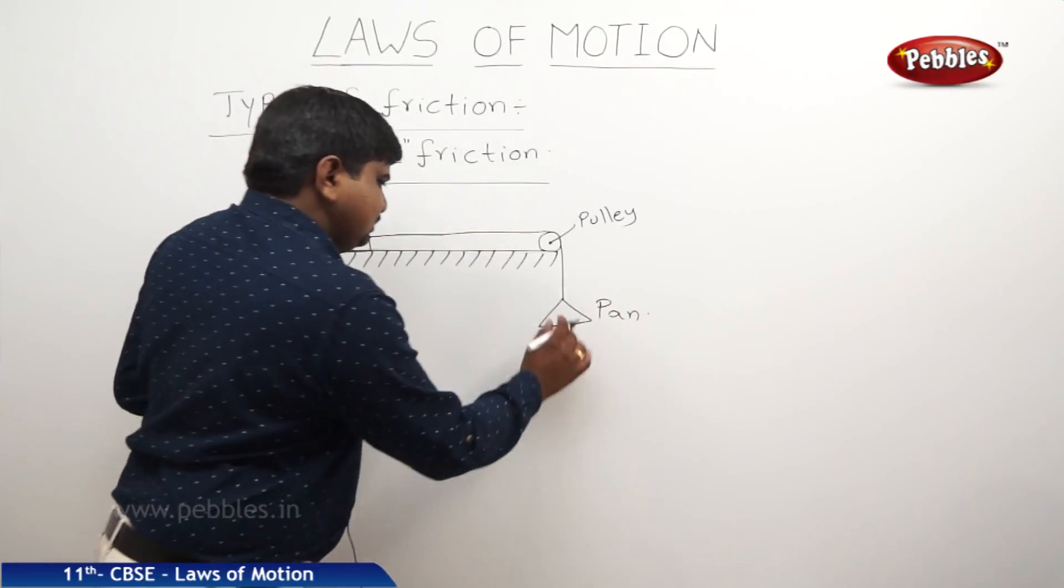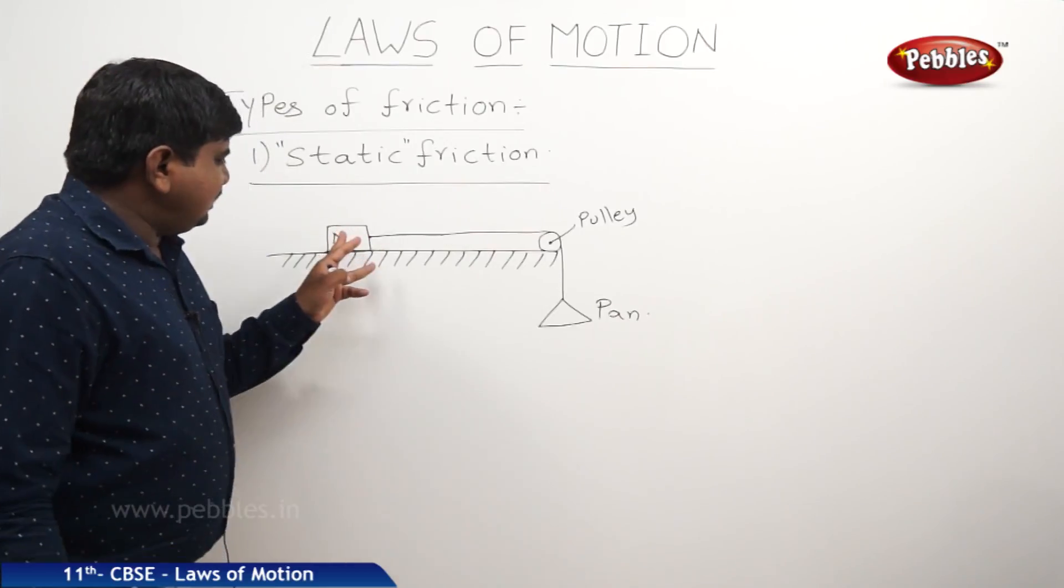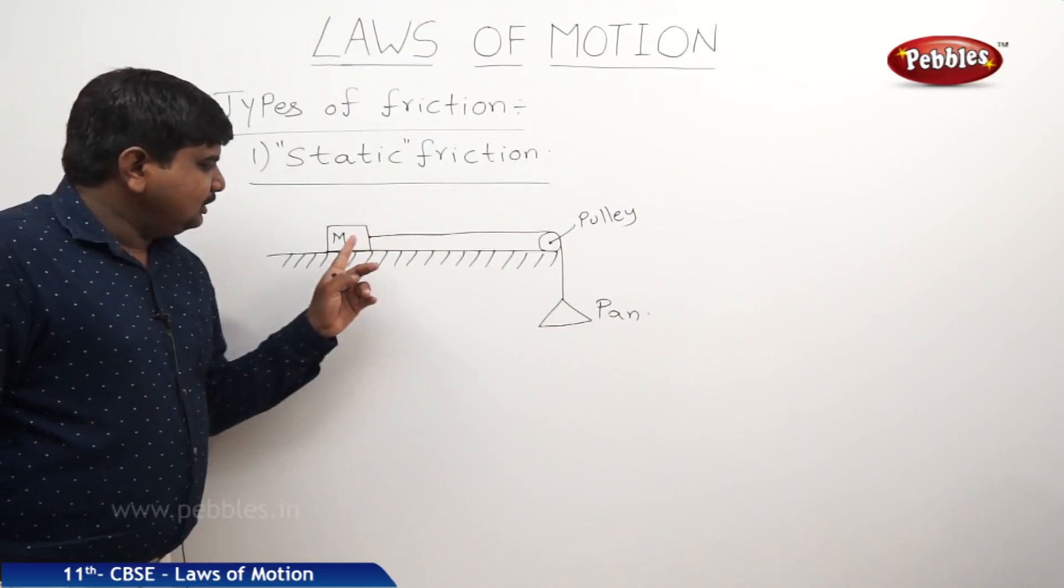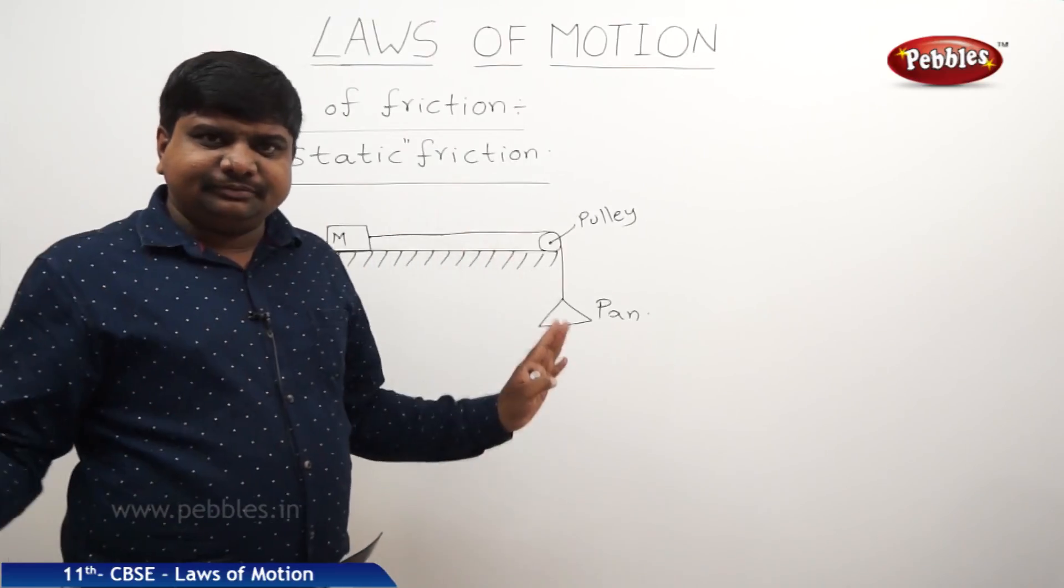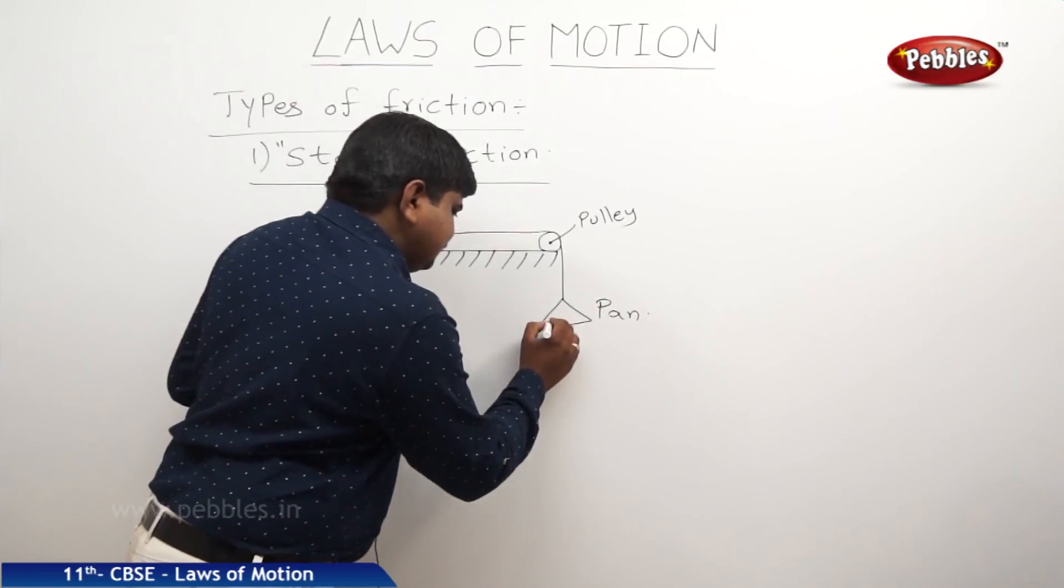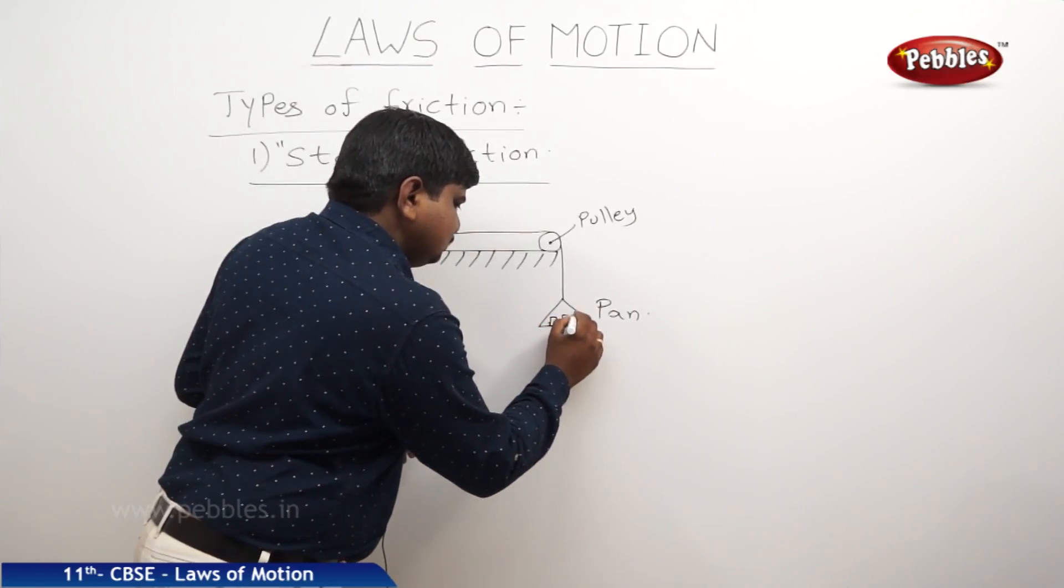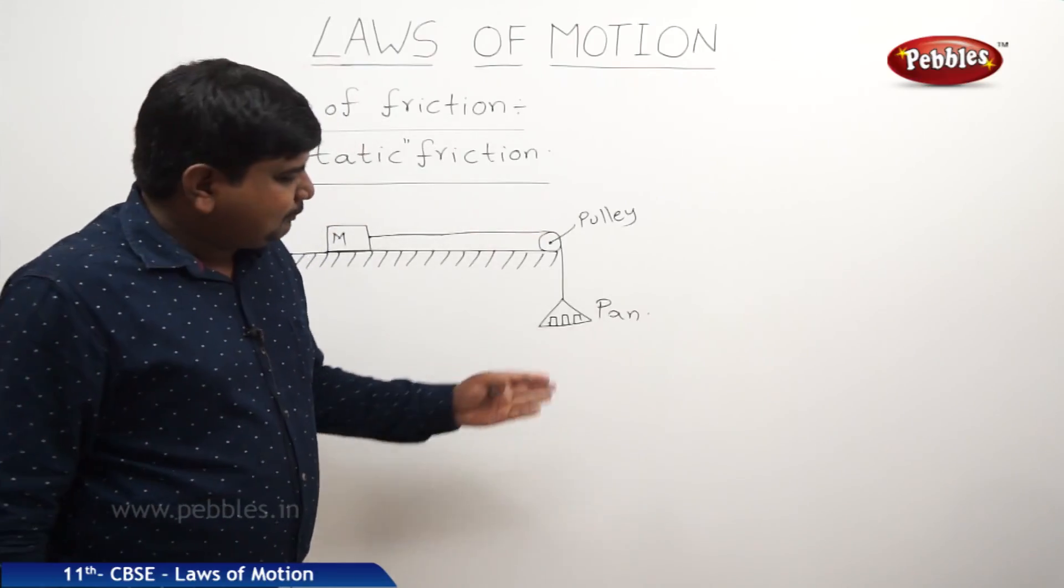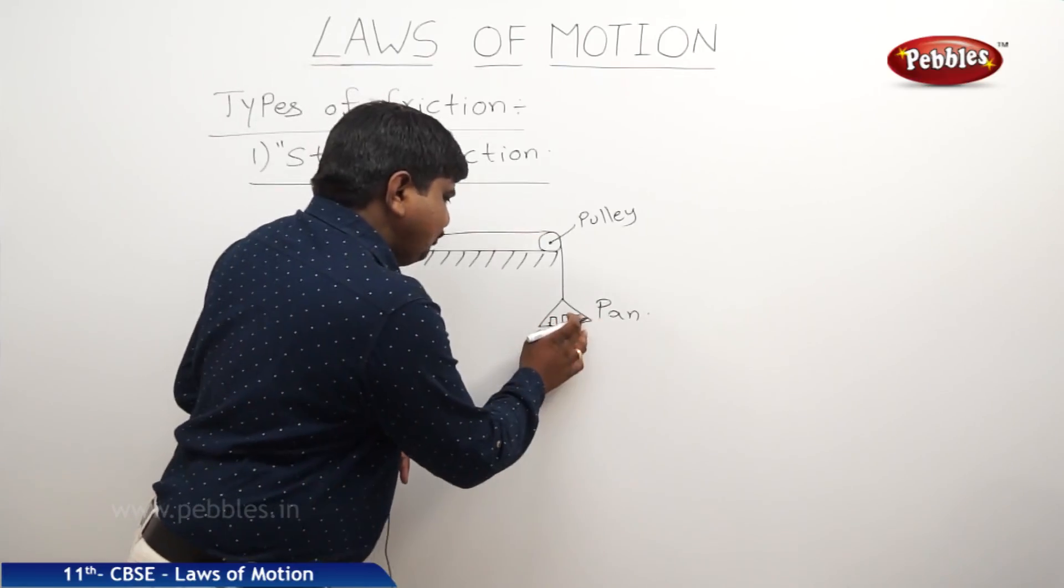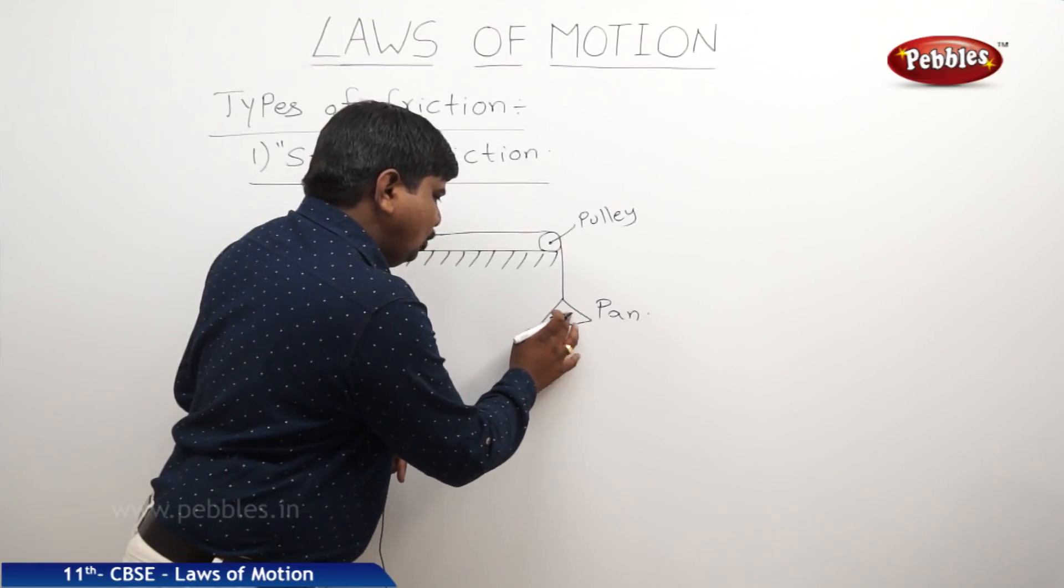If suppose there is no weight in the pan that means the net force acting on the object is zero. Therefore the body won't move. When we keep on adding the weights in the pan, suppose for example I have drawn some three weights. Let us take one weight is added or loaded in the pan.